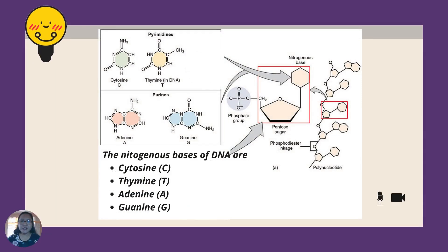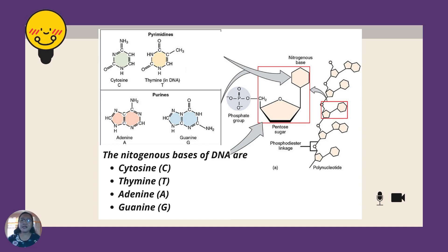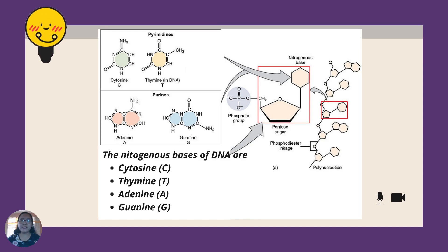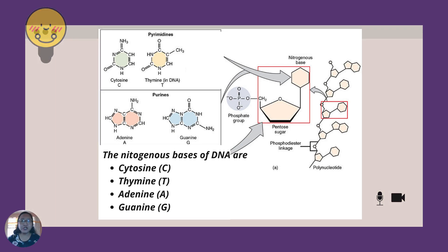Each nucleotide is made up of a nitrogenous base, a phosphate group, and a five-carbon sugar. The nitrogenous bases of DNA are cytosine (symbol C), thymine (symbol T), adenine (symbol A), and guanine (symbol G).